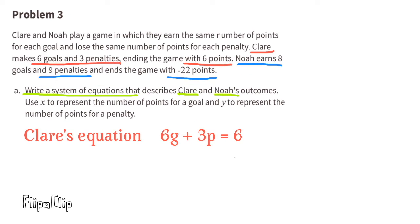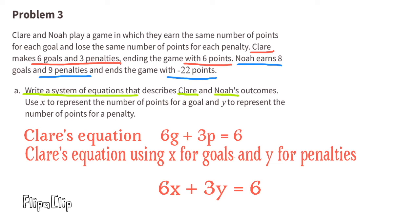Here's Claire's equation. 6G plus 3P equals 6. The 6G represents the 6 goals she scored. 3P represents her 3 penalties, and 6 represents the points she ends the game with. Here's a look at Claire's equation using X for goals, and Y for penalties.